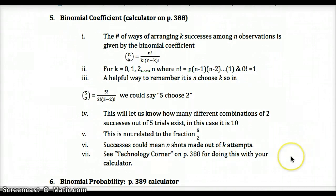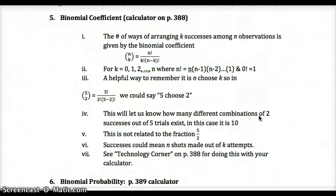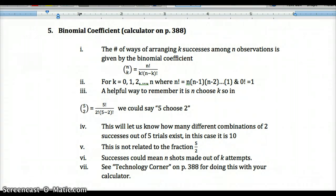The binomial coefficient tells us the number of ways of arranging k successes among n observations. We often say 'n choose k.' For example, with three coin flips, two successes could be the first two or the last two. For five choose two, there are ten different ways we could have two successes in five trials. Page 388 shows how to do this on your calculator.